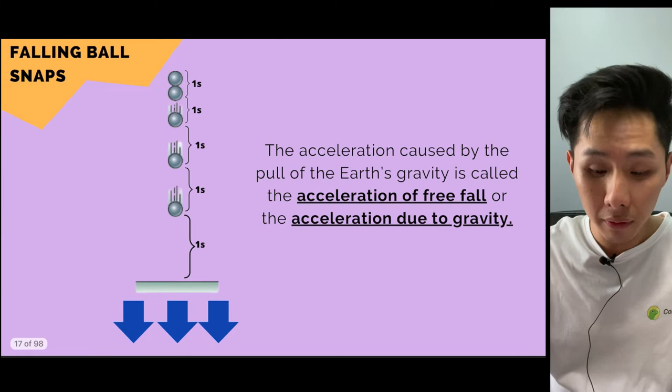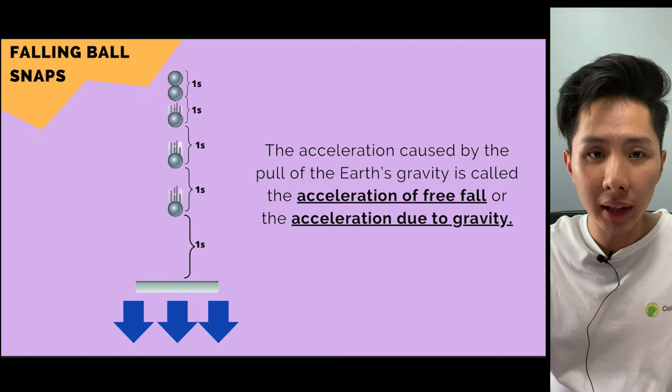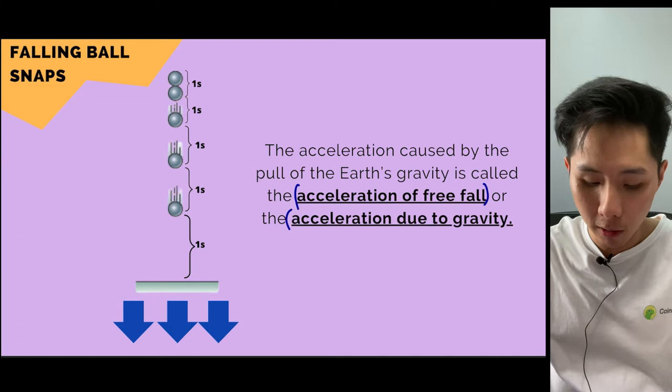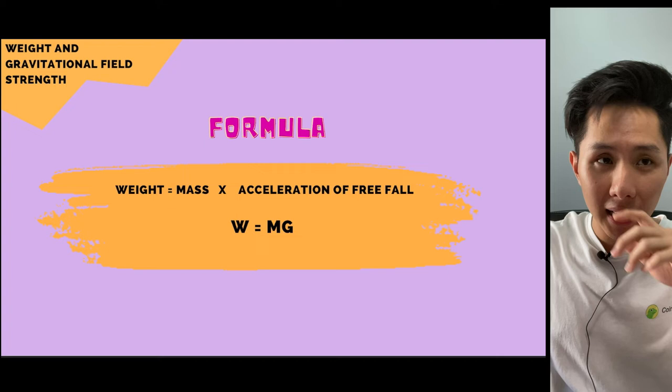We know gravity causes objects to fall and accelerate. This acceleration is called the acceleration of free fall, also known as the acceleration due to gravity. Now let's learn how to calculate an object's weight. If I say I'm 60 kilograms, that's my mass, not my weight.